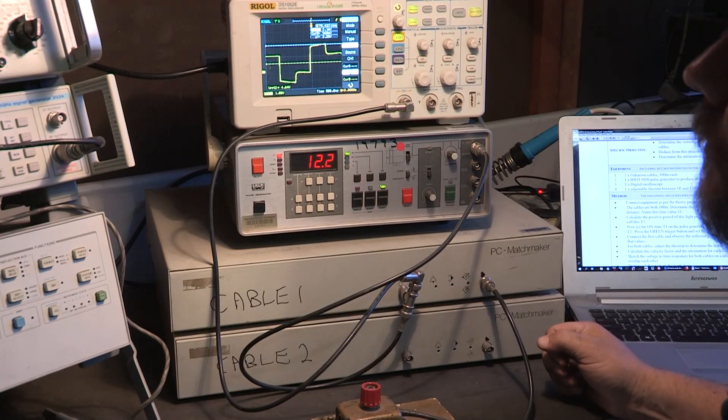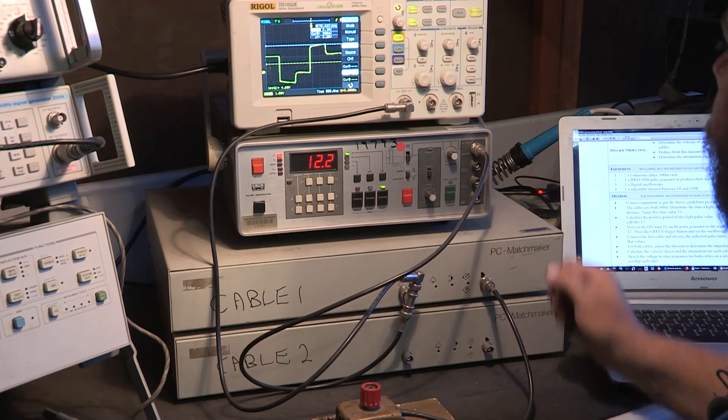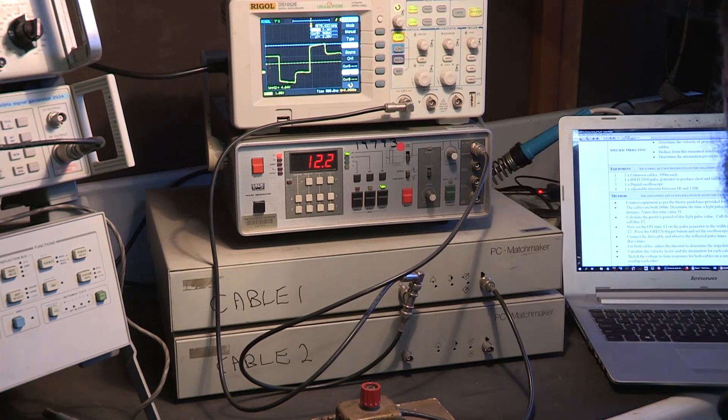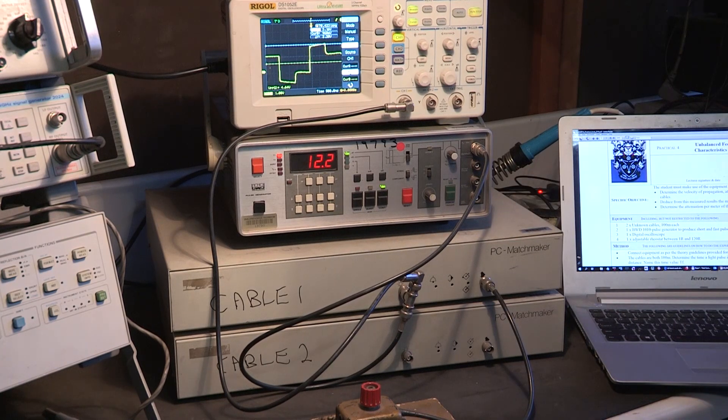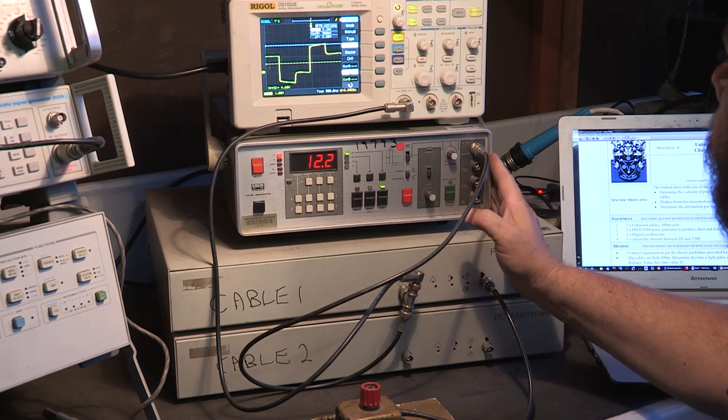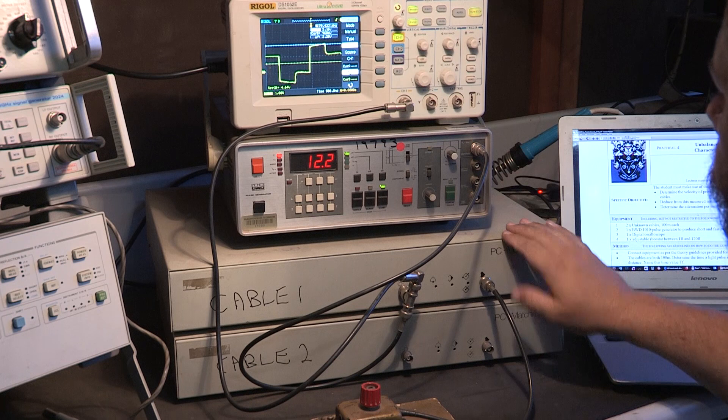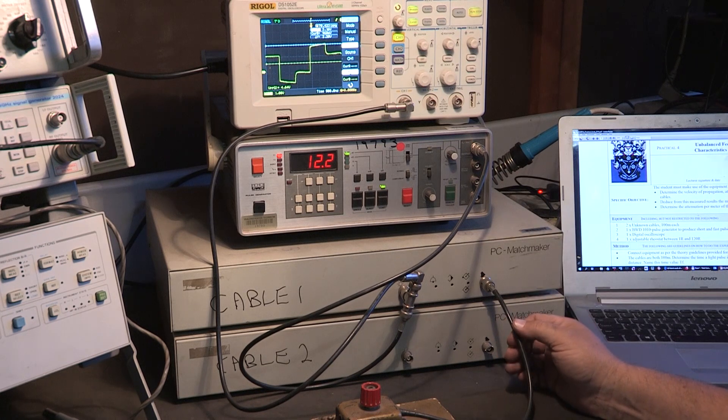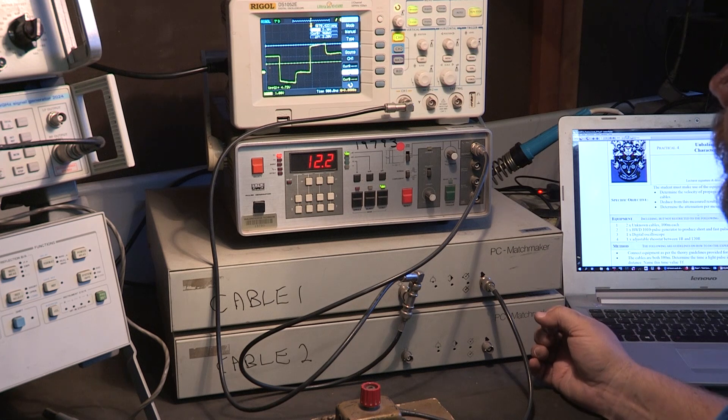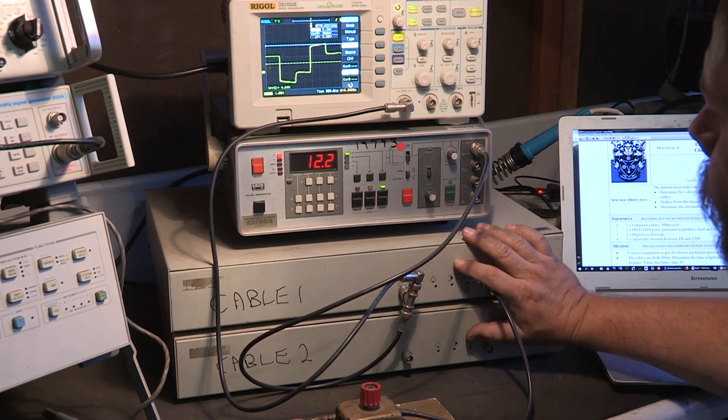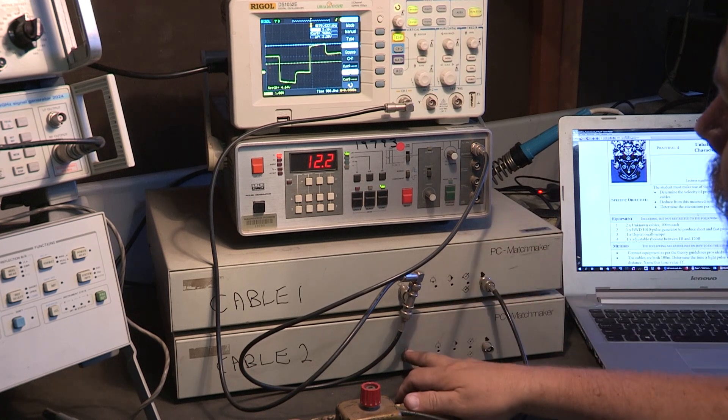All right, good afternoon ladies and gentlemen, welcome back to another measurements experiment. This one is an experiment using a signal generator and an oscilloscope with two mystery cables. We are looking at unbalanced feed line characteristics, and the idea is to identify what kind of feed lines are within these two mystery boxes.